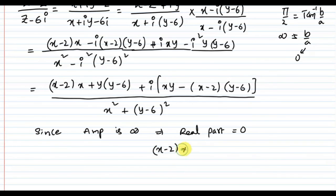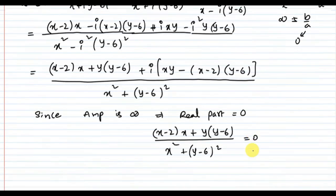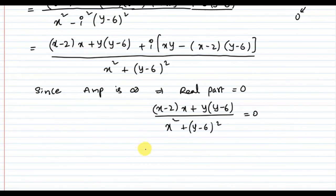(x - 2)x + y(y - 6) equals 0. This gives us x² - 2x + y² - 6y equals 0. This is our answer.